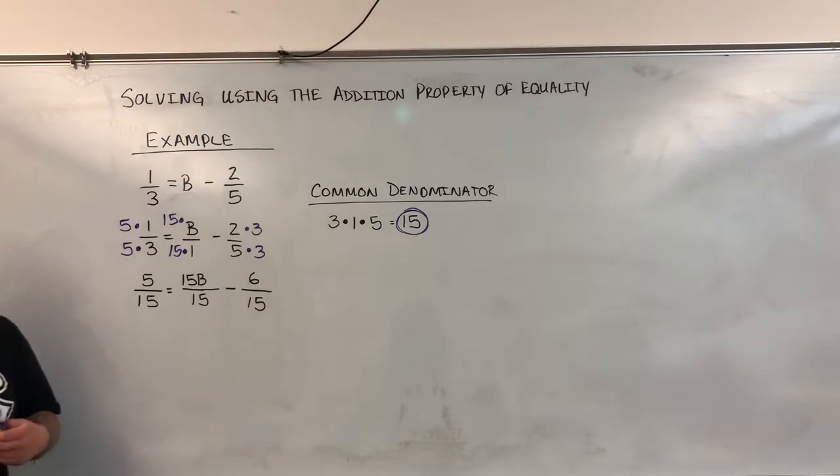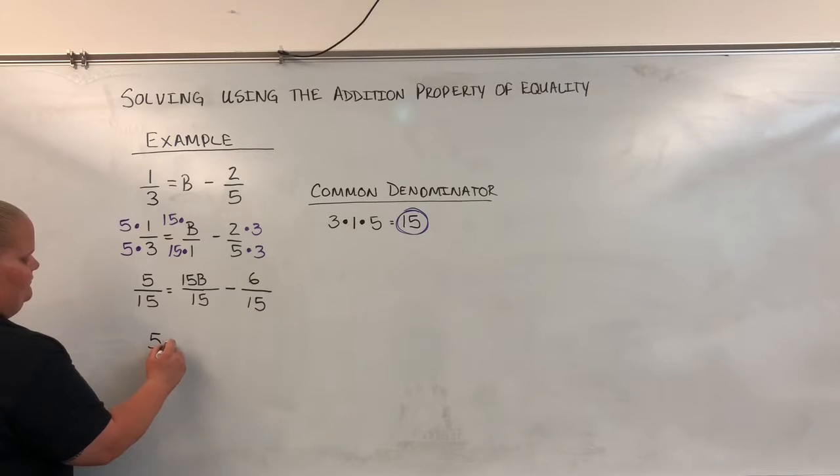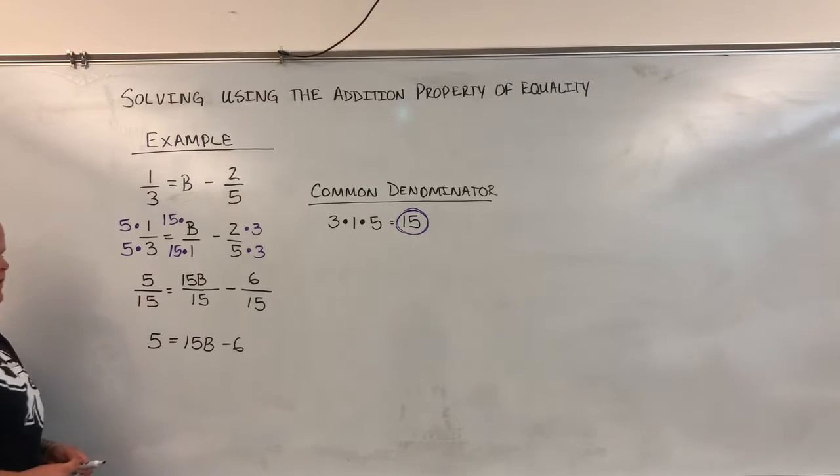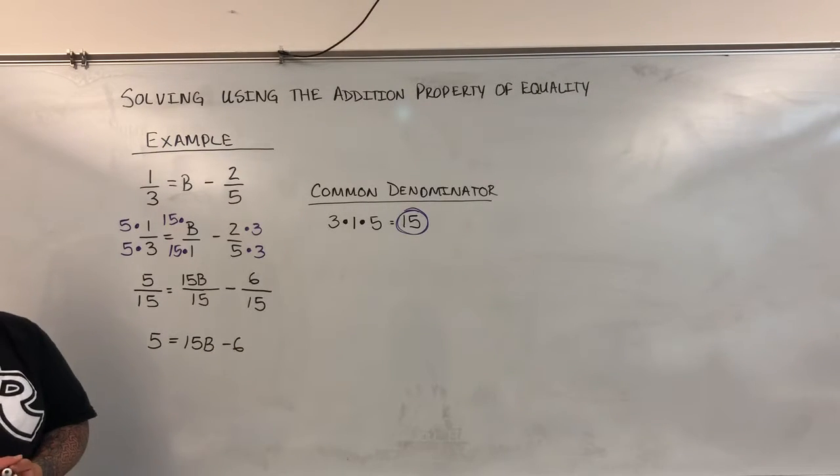Now that my denominators are all equal, I can just focus on what the top parts of each fraction are. So what I have is 5 equals 15B minus 6. Now I can just solve this equation for B.